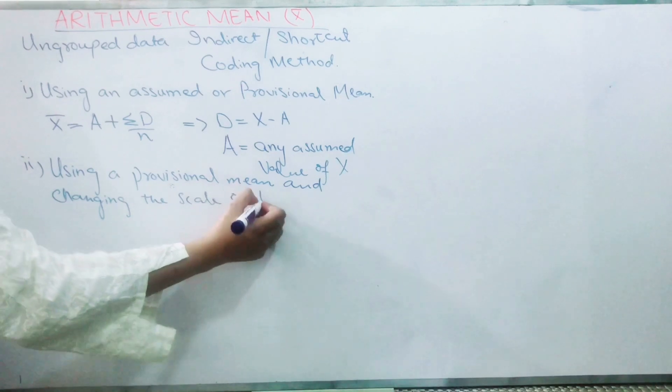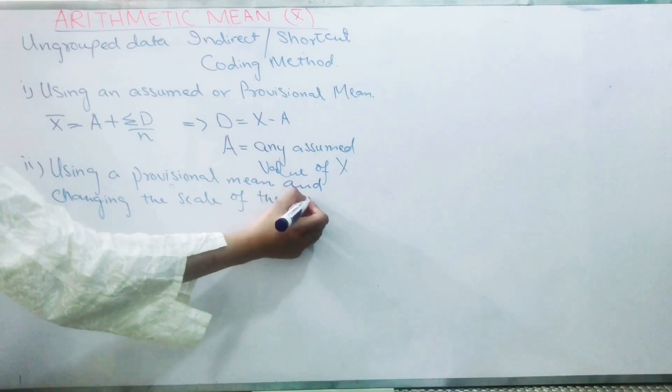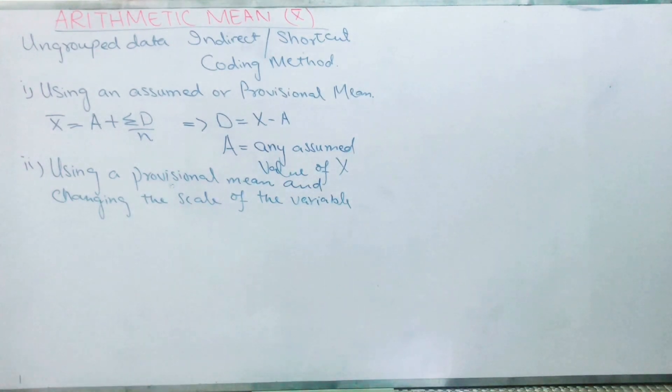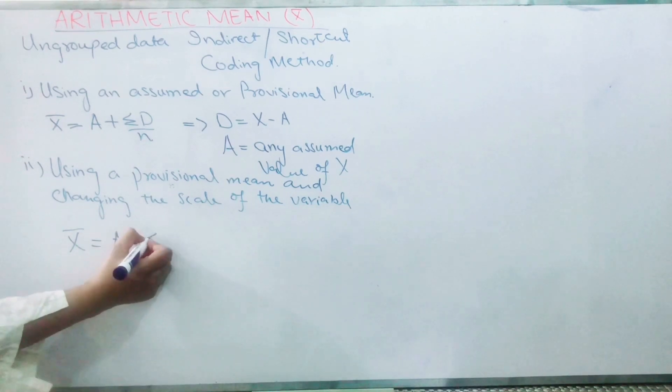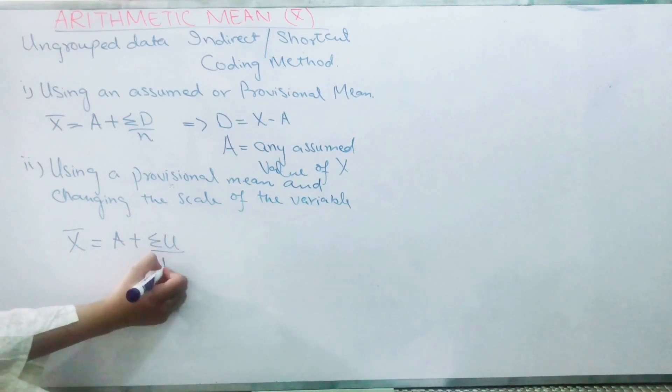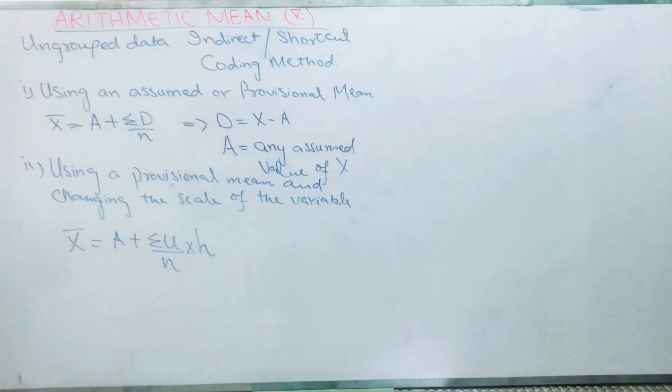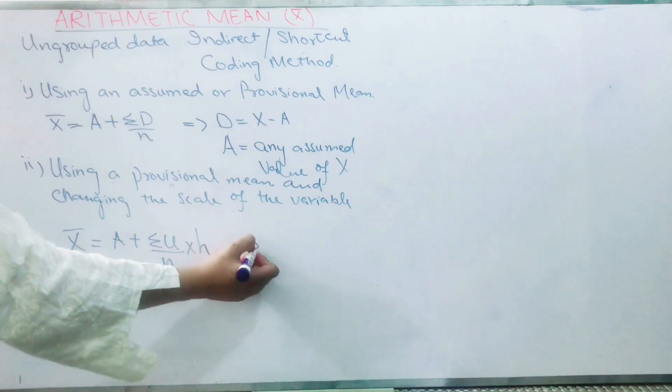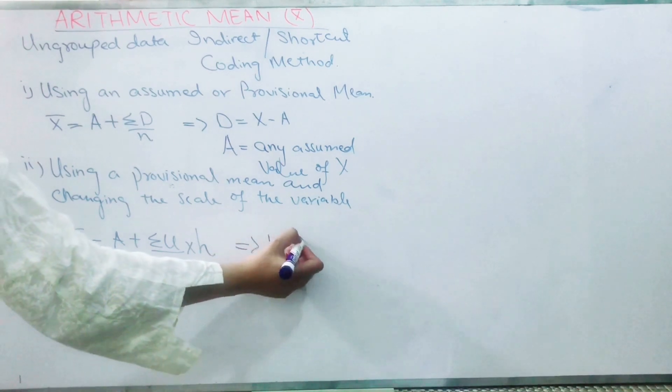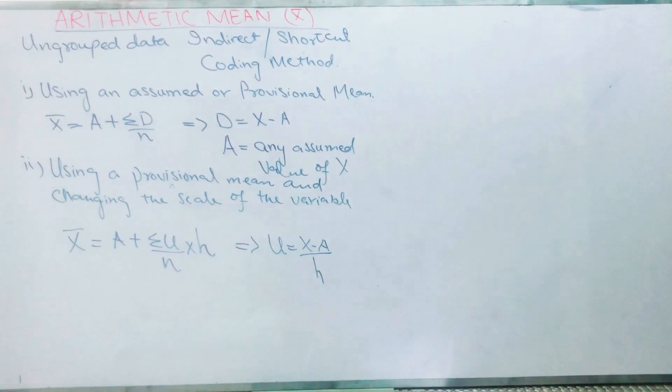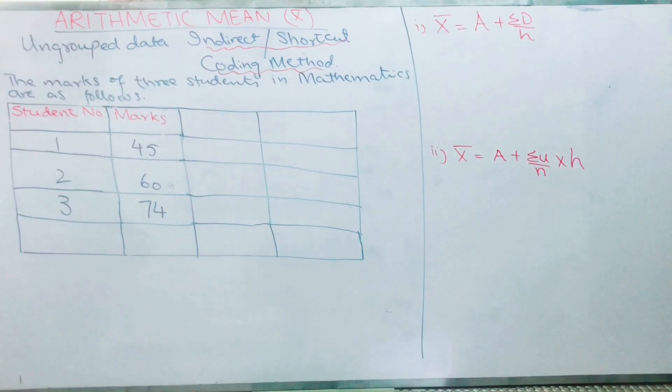It has the formula: x̄ = A + (Σu/n) × h. What is u? u = (x - A)/h, and h equals the class interval.